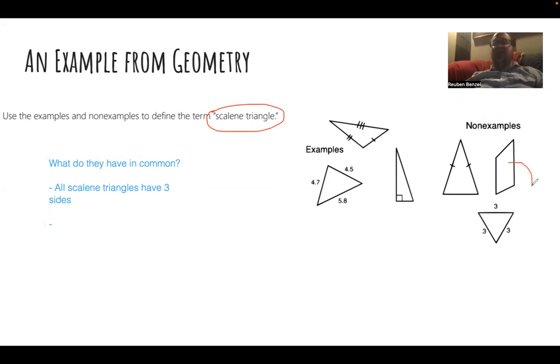So one thing that I noticed with the non-examples here - I'm actually going to start with the non-examples for thinking about how things are differentiated. This one has four sides, so that's obvious that we are not having a scalene triangle. This has all sides the same, or congruent, and this example may have two sides the same.